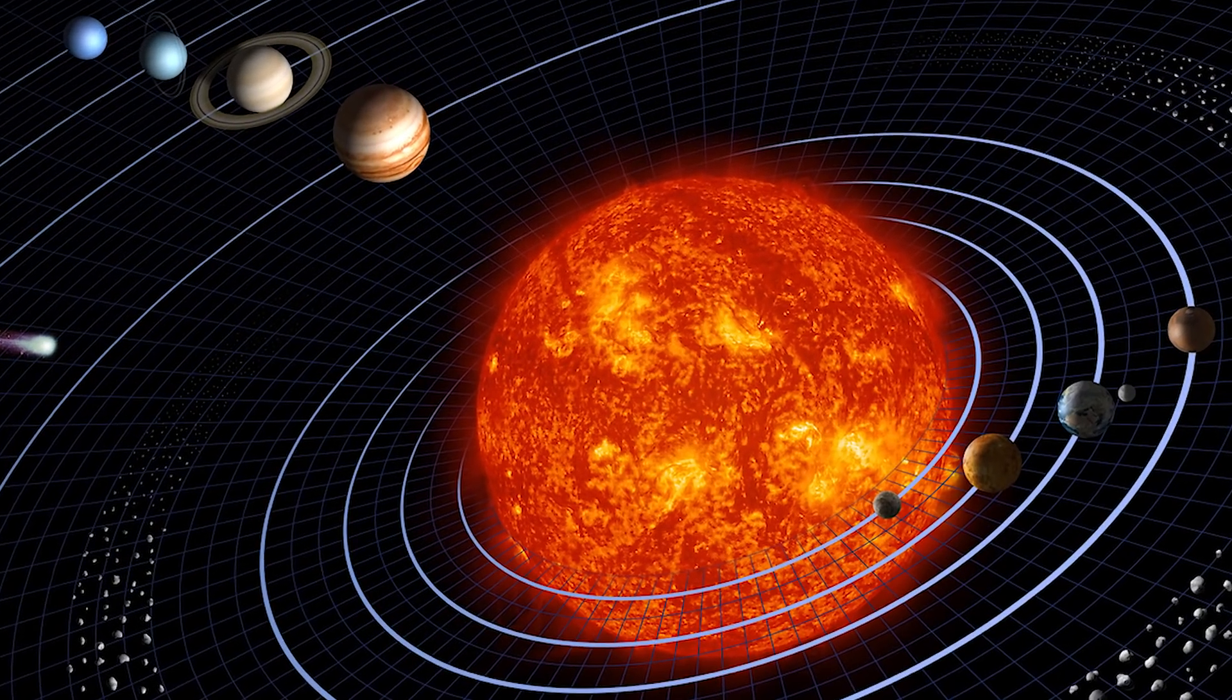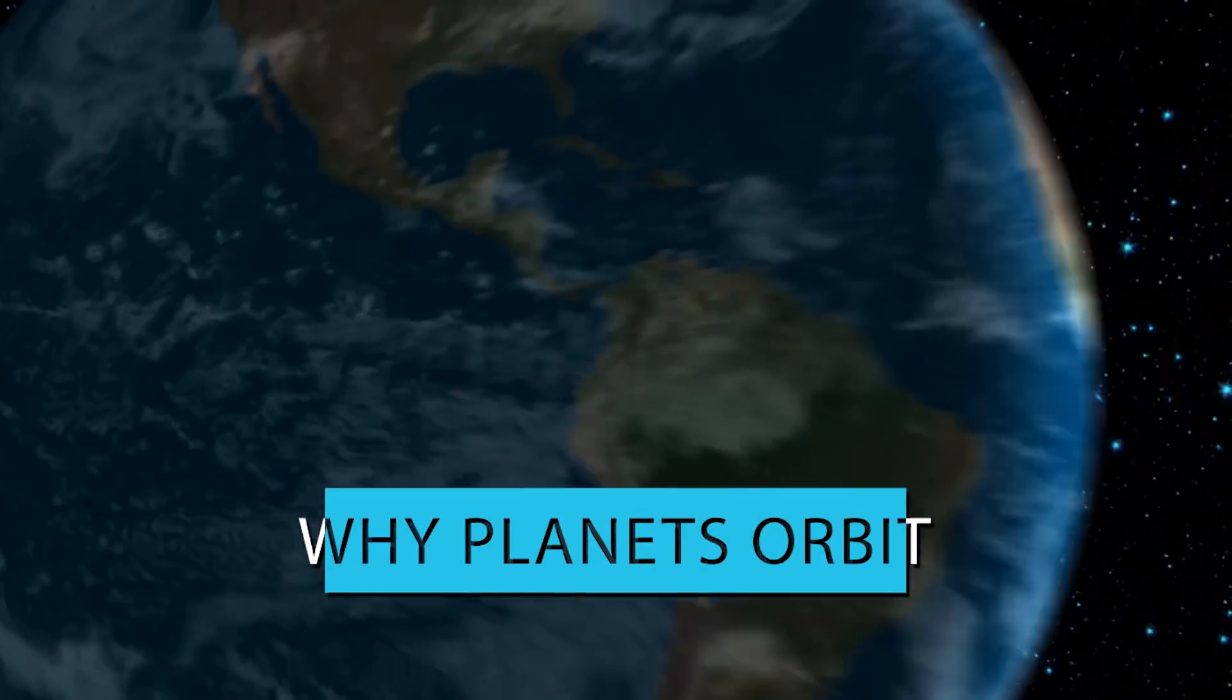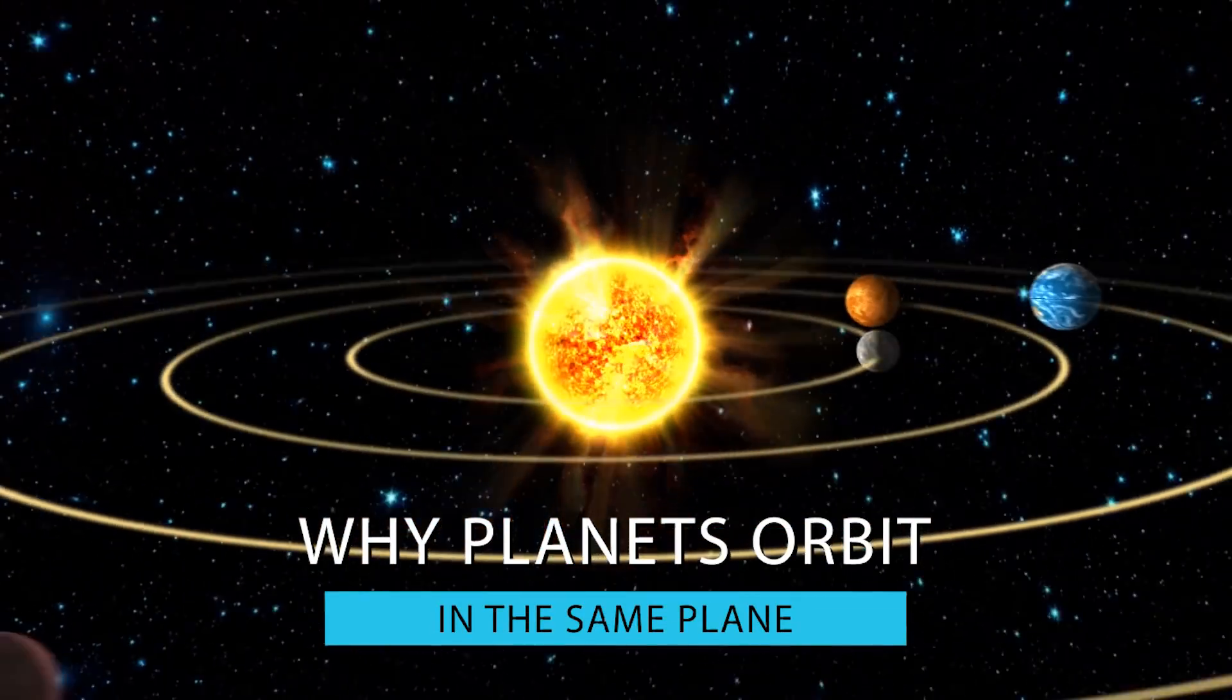We live in a 3D space, but have you ever wondered why our solar system is always presented in a 2D disc shape? Well that's what we're going to explore in today's episode!